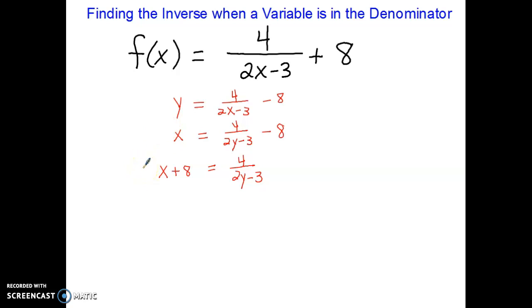So doing the same thing that I did in the past, I don't want this y in the denominator. So what I need to do is show a multiplication, but it has to be that whole quantity. So I'm going to multiply the quantity of 2y minus 3 to both sides of my equation. That permits these two to divide out, so I'm just left with a 4.